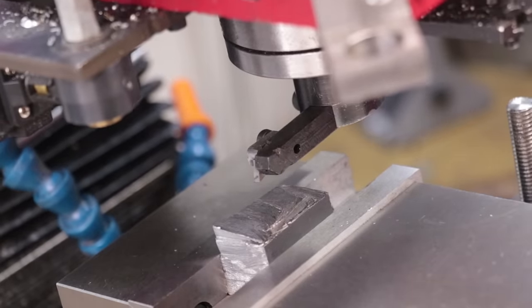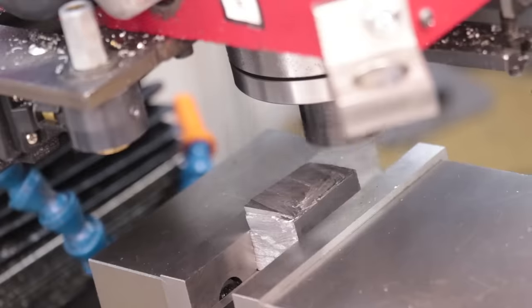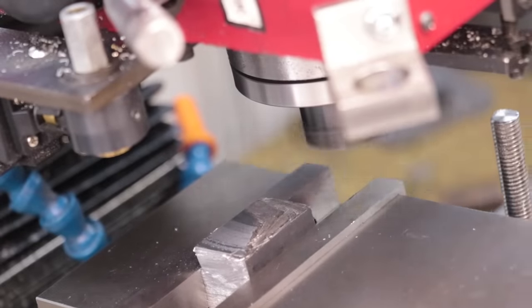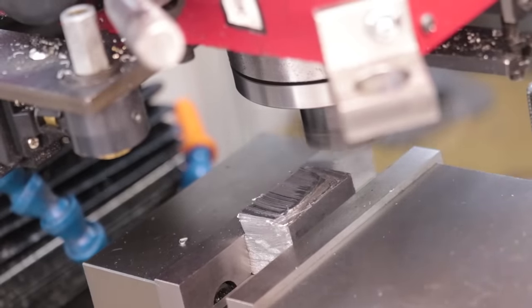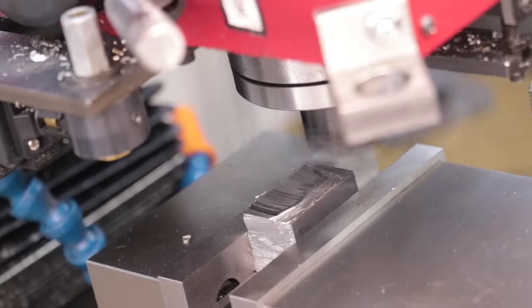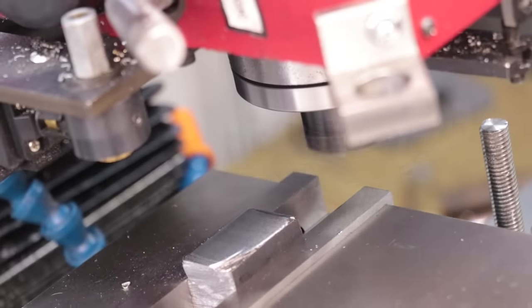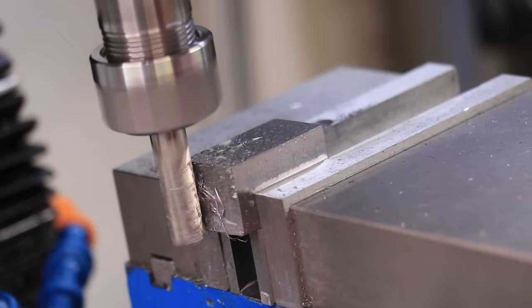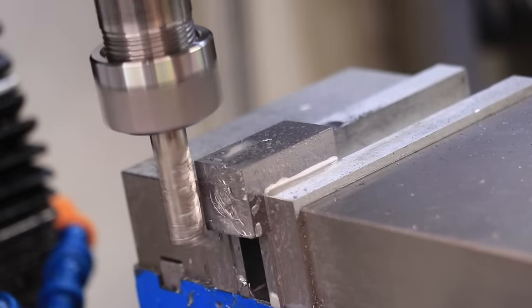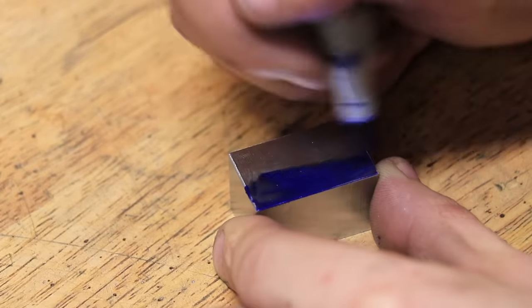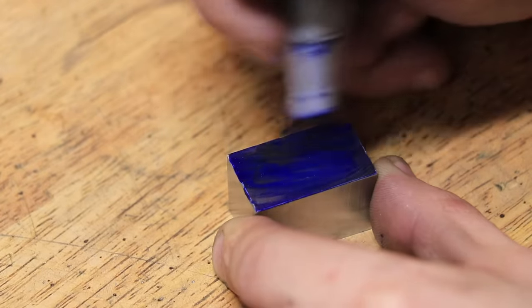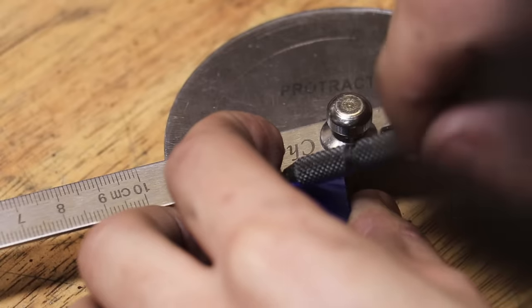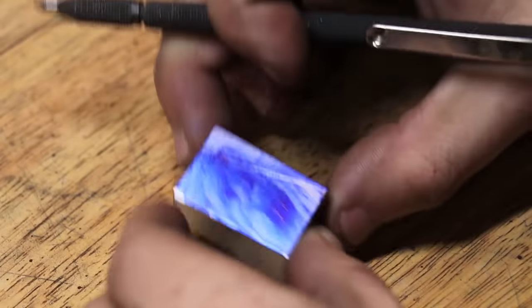The first thing I'll machine up is the angle block. The angle that I'm going for is not hugely critical but I'm going for something roughly in the region of 10 degrees.